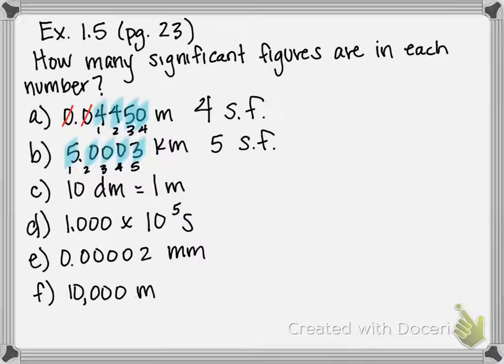For C, we have a defined quantity: 10 decimeters equals 1 meter. There's no decimals - it seems kind of weird, kind of ambiguous. Any time you see a defined quantity, like 1 meter equals 100 centimeters, or 10 decimeters equals 1 meter, these actually don't have significant figures at all. These have unlimited significant figures because they're a predefined quantity. This one's kind of a trick question. That's going to be the case for any basic defined quantity relationship, especially in the metric system.